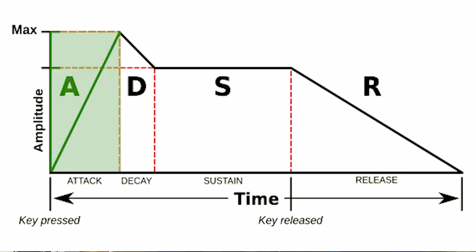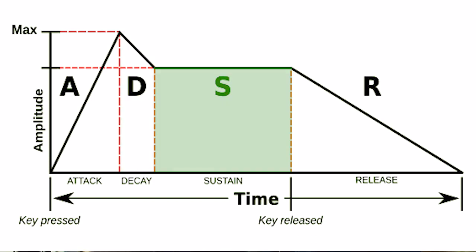The attack will inform the module how quickly that shape reaches its maximum voltage. The decay will indicate how quickly after that it reaches the sustain level. The sustain level means that the signal will stay at that level until you release the signal — so in the case of a synthesizer, until you release the key that you're pressing. After that, the release takes over and informs how long that signal fades down to zero.